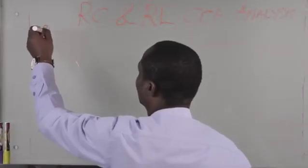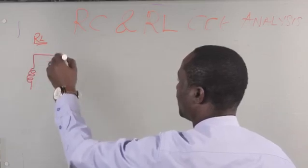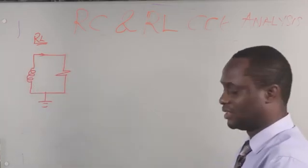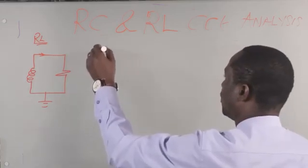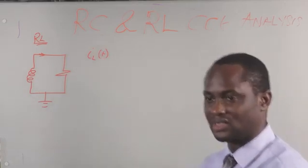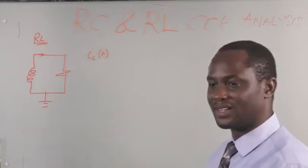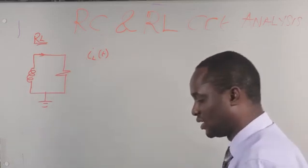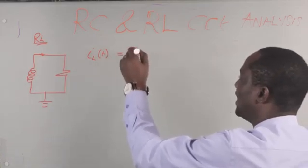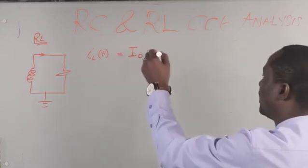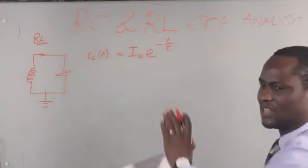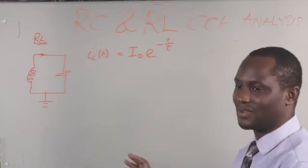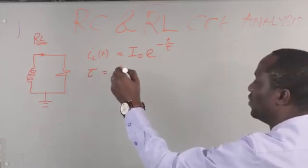We want to look at RL circuits now. Just like for the RC circuit, you can have RL circuits with current flowing, and this is source-free for RL. The expression for this is IL(t). T can be zero — that is the initial condition — or it can be 0.1, 0.2, 0.3, depending on the time at which you want to calculate the current in the inductor. IL(t) equals the initial current in the inductor multiplied by exponential minus t over tau. The tau is the same form, but instead of RC, it's L over R. So the expression for tau here is L over R.